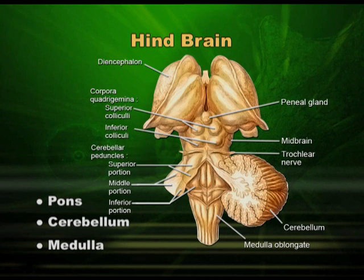We sometimes call it medulla oblongata. This continues as the spinal cord in our vertebral column, and the spinal cord is equally important. The hindbrain has a respiratory center controlling respiration, and also centers controlling cardiovascular reflexes and gastric secretion.